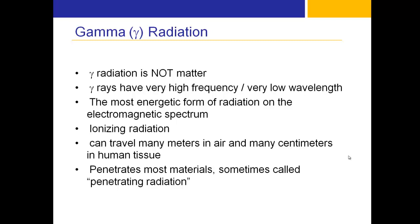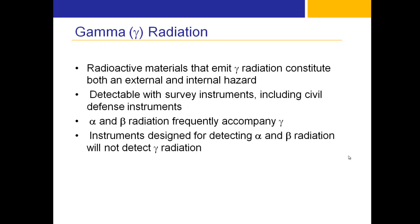Gamma radiation is extremely ionizing and can travel many meters in air and many centimeters in human tissue. It can penetrate deeply into your body and affect elements in your bones, your DNA, and the cells in your body. Radioactive materials that emit gamma radiation constitute both an external and internal hazard.